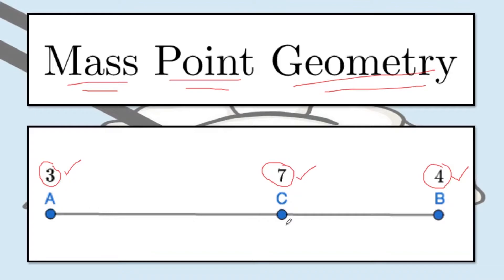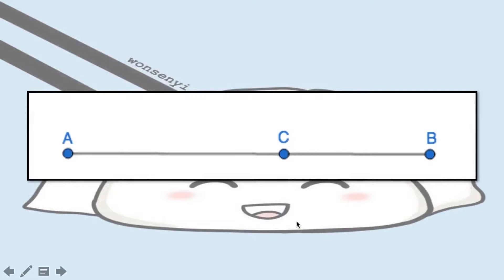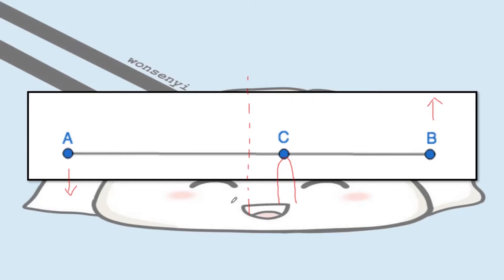Now let us try to go into why this is balanced. The concept of mass point geometry comes from physics, but we're not going to talk about physics here. Suppose you put your finger on a stick — let's say the stick is segment AB. If you put your finger on point C that is not at the center, point A will tend to go down and point B will tend to go up, because AC is longer than CB. AC is longer, which means it's heavier. Now, if your finger was in the middle instead, it would be balanced. This is also called the center of mass.